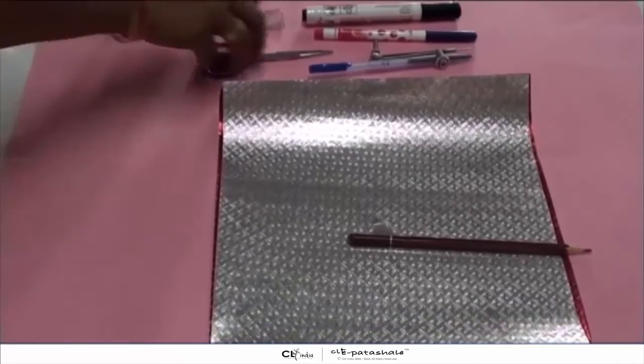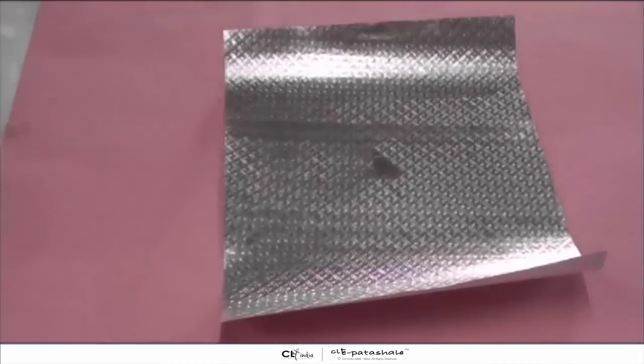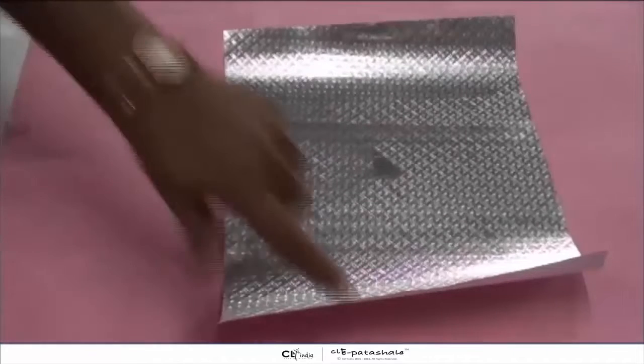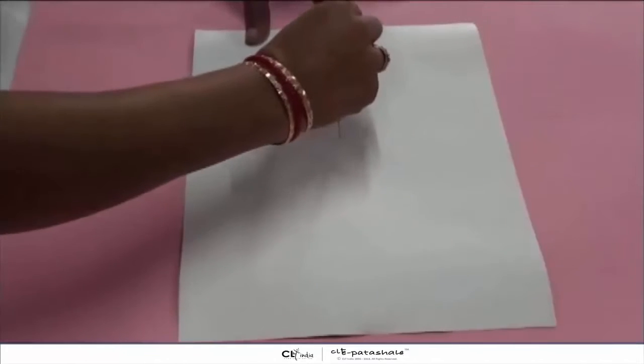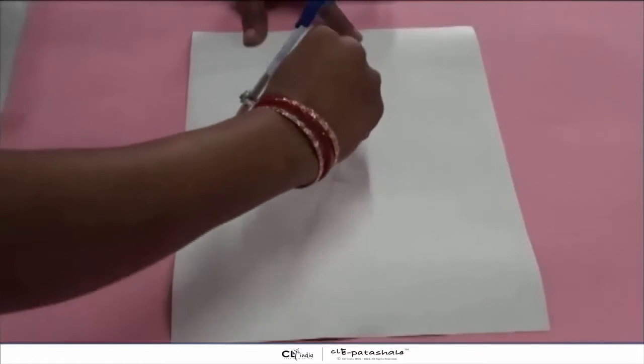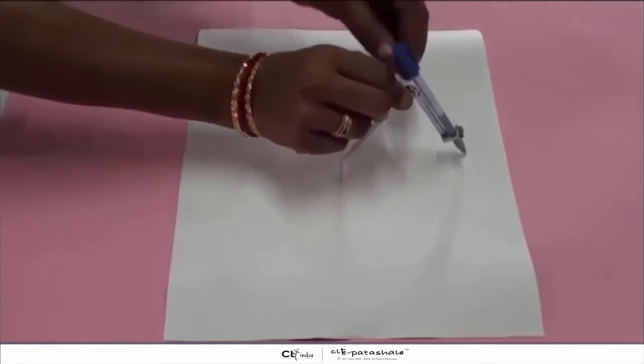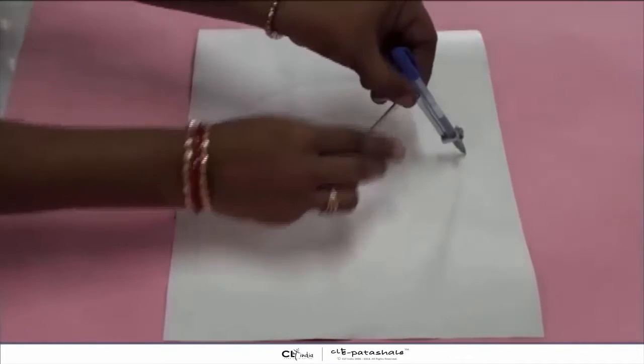Now let's start with the activity. Please observe the steps and the procedure. First of all, we have to draw a circle of any radius on a colored paper. Take this colored paper, use your compass and a pen or pencil, and draw a circle of any radius.